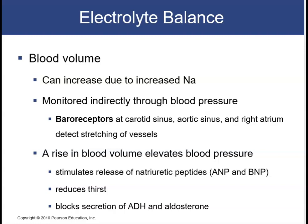Blood volume is monitored indirectly through blood pressure. We have baroreceptors located in the carotid sinus, aortic sinus, and right atrium that detect stretching caused by increased volume. A rise in blood volume will elevate blood pressure and stimulate these baroreceptors, resulting in the release of natriuretic peptides — both ANP and BNP — a reduction in thirst, and blockage of ADH and aldosterone secretion. This is why one of the first interventions for high blood pressure is reducing salt intake, which decreases sodium intake and helps decrease volume.